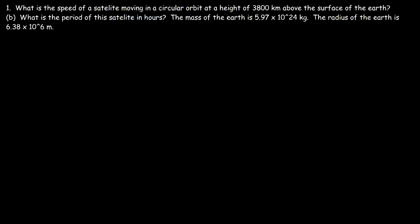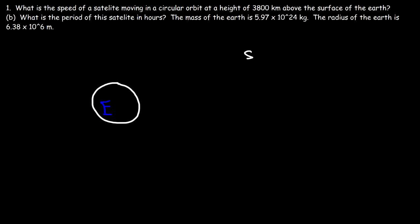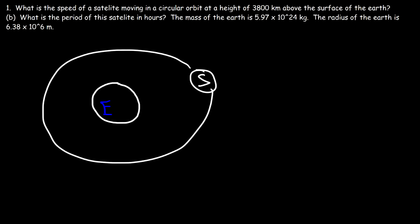How can we calculate the speed of a satellite that is moving in a circular orbit at a height of 3,800 kilometers above the surface of the Earth? Let's draw a picture — this is the Earth, and here is a satellite that orbits the Earth. To find the speed of that satellite, we need to derive an equation.